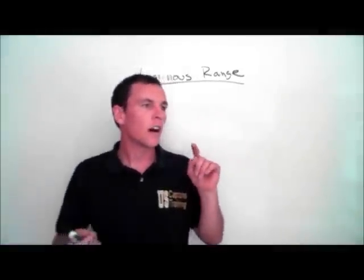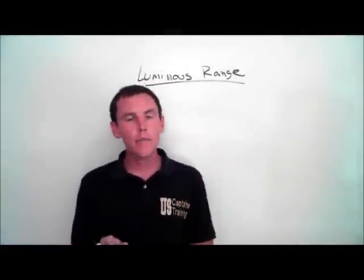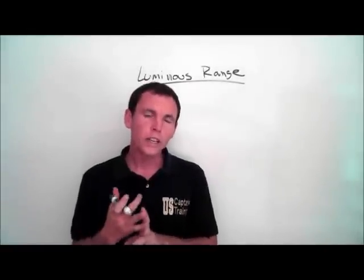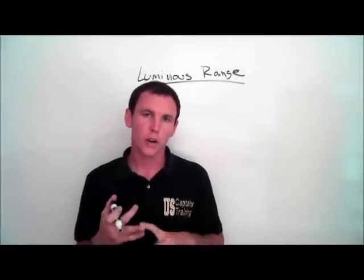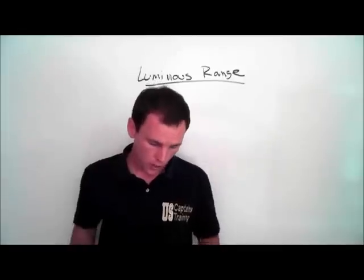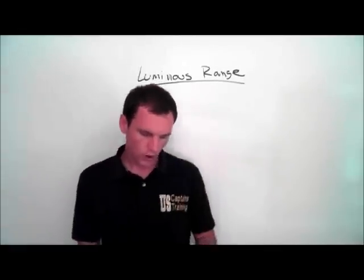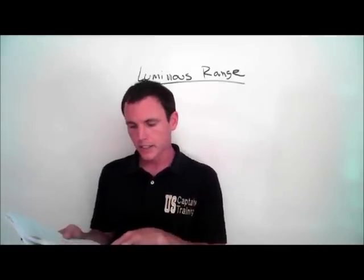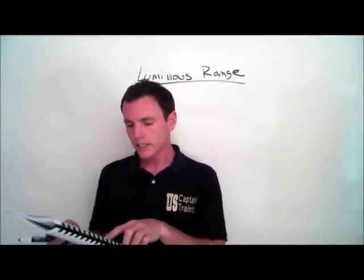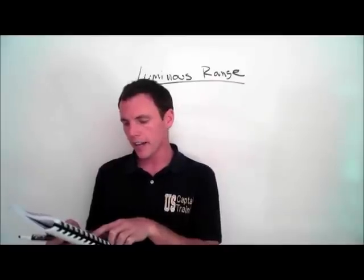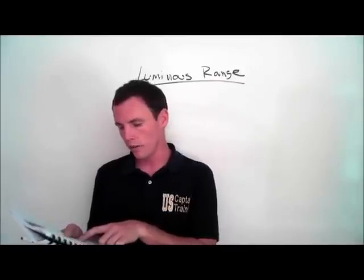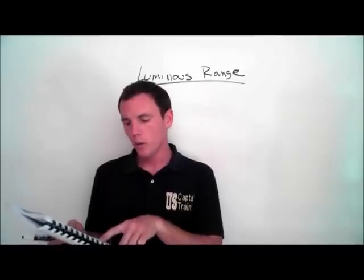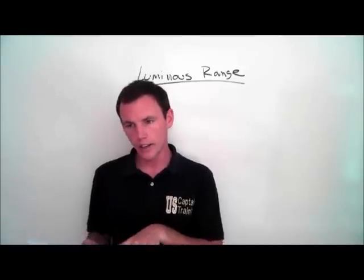Given a light's nominal range and the visibility for that day, we can figure out the light's approximate luminous range. Here's an example problem: the light list shows that a navigational light has a nominal range of 12 miles and the visibility is 0.5 miles. What is the luminous range of the light?